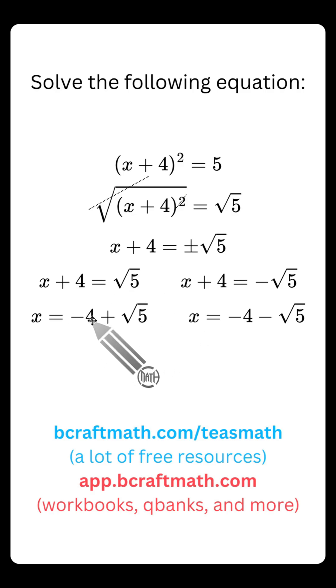And again, we cannot subtract four from that five. So we're just going to write negative four, which is that subtract four. And this was a positive square root of five, so we have plus square root of five. And over here, the only difference, we're still subtracting four from both sides, but this was the minus square root of five.